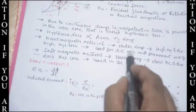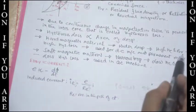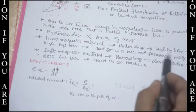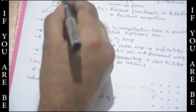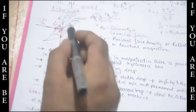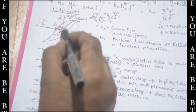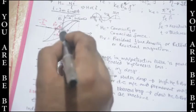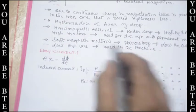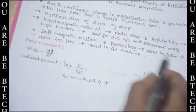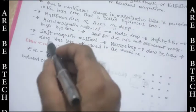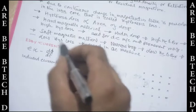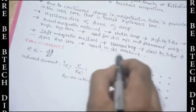Hard magnetic material has a wider loop with higher coercive force H_C and higher residual magnetism B_R. Soft magnetic material has a narrow loop, low hysteresis loss, low H_C, and low B_R. Soft magnetic material is used in AC machines due to its low hysteresis loss.